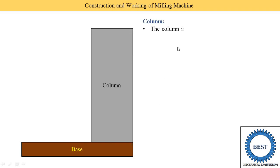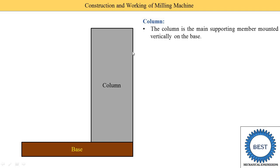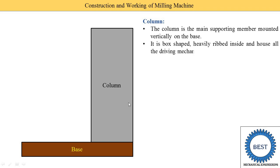The next component is the column. The column is the main supporting member mounted vertically on the base — it is a vertical part mounted on the base. It is box-shaped, meaning its shape is like a box, and heavily ribbed inside.